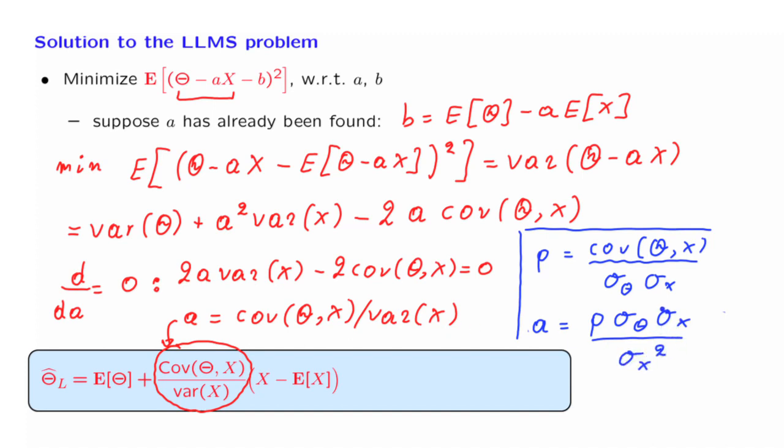And after we cancel a factor of sigma x from the numerator and the denominator, we see that a is also equal to rho times sigma theta divided by sigma x. And this gives us this alternative form for the solution.